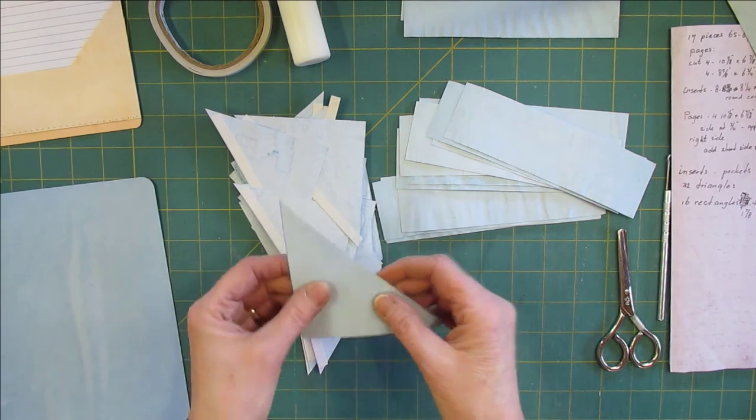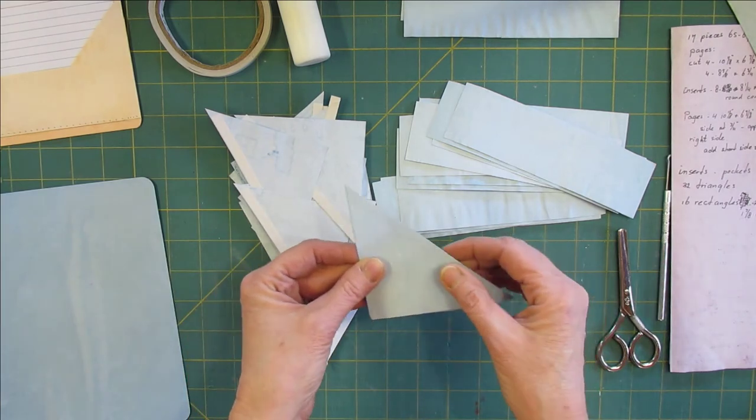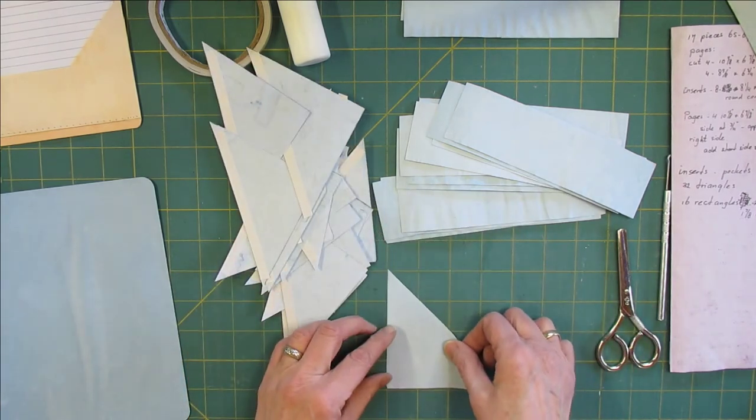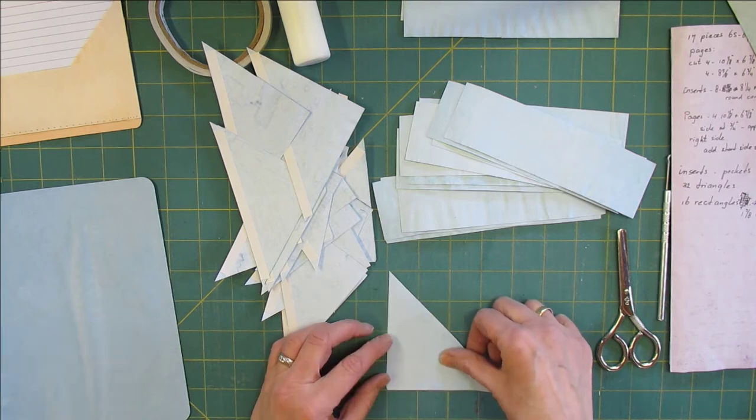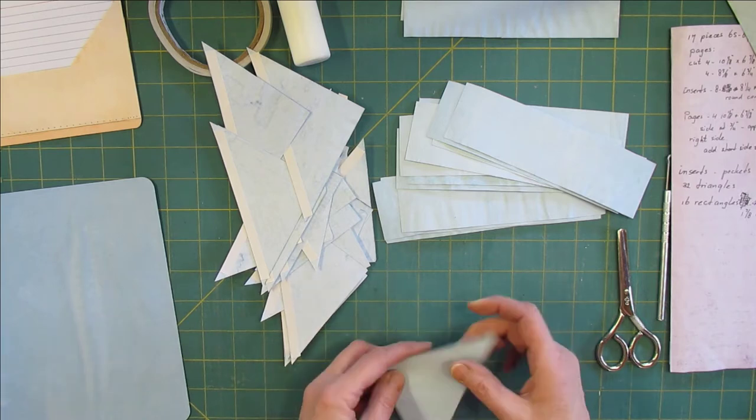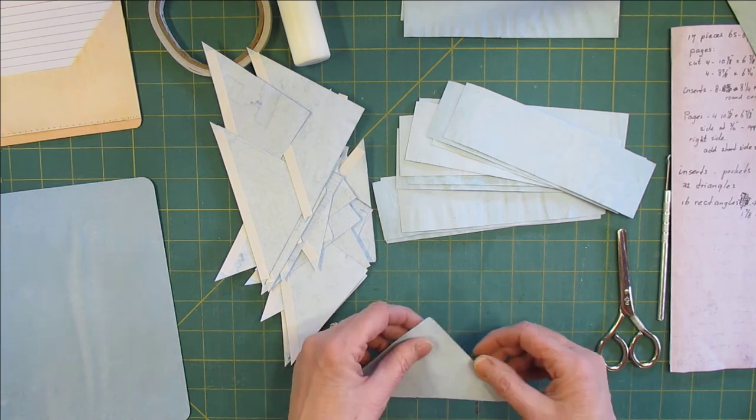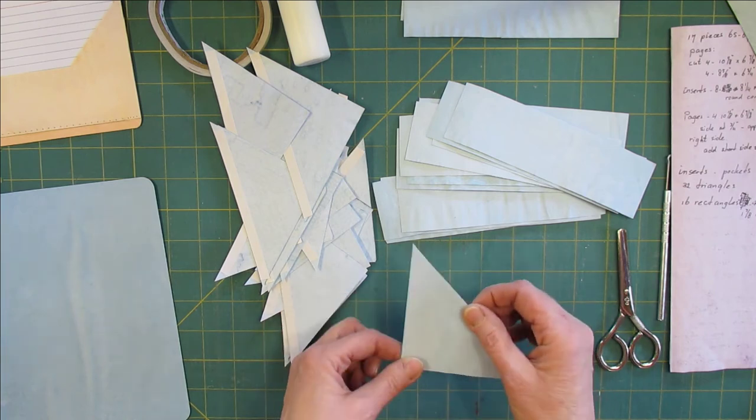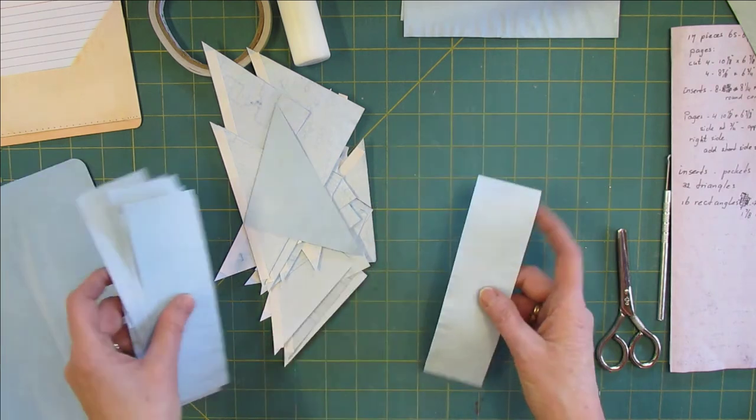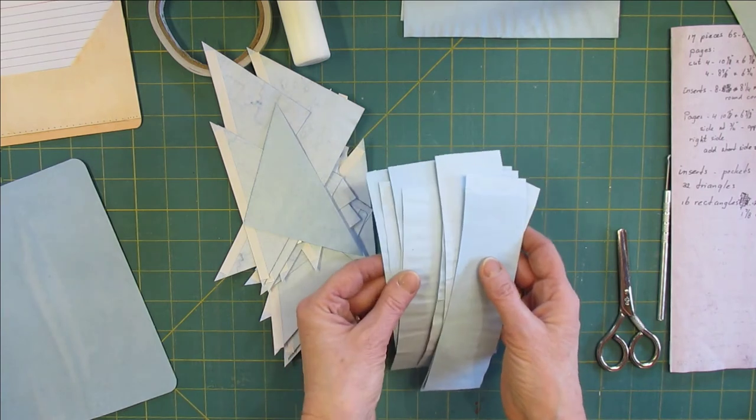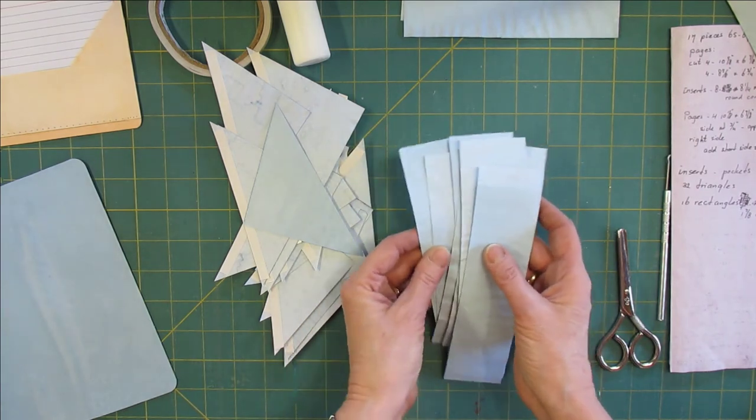We need 32 triangles and I have cut mine so the short edge is four inches, but if you can make it 4 1/4 then you have a little bit more paper to make the pockets with.